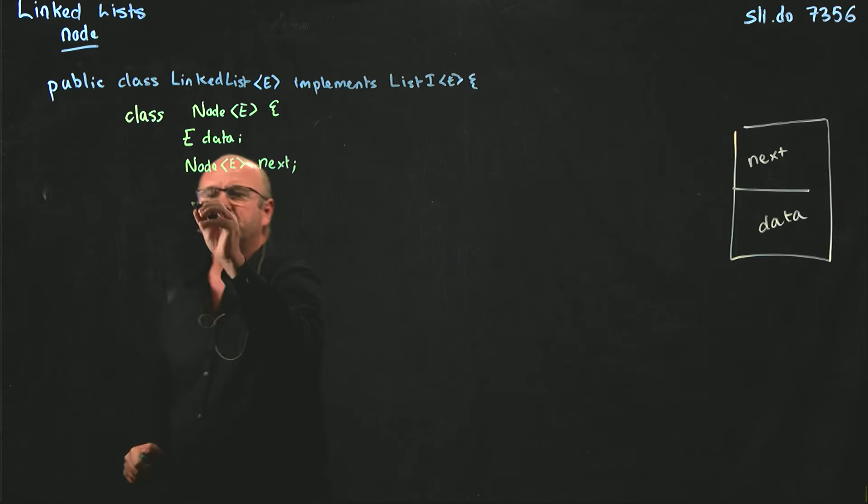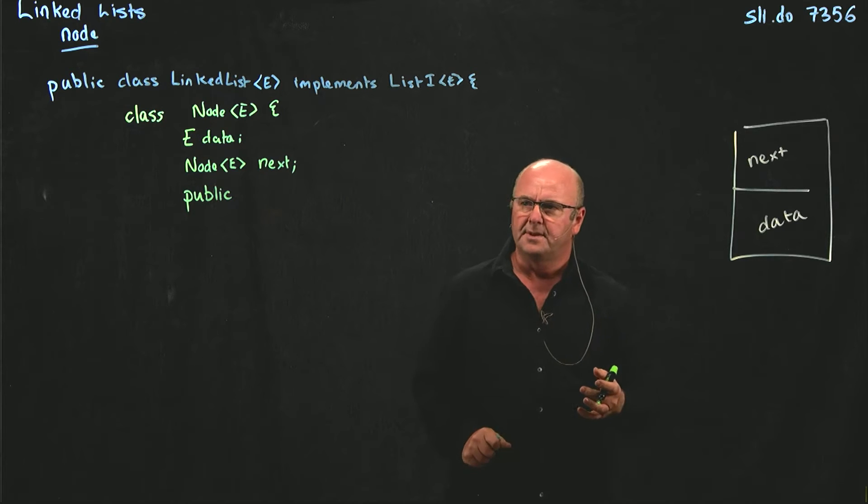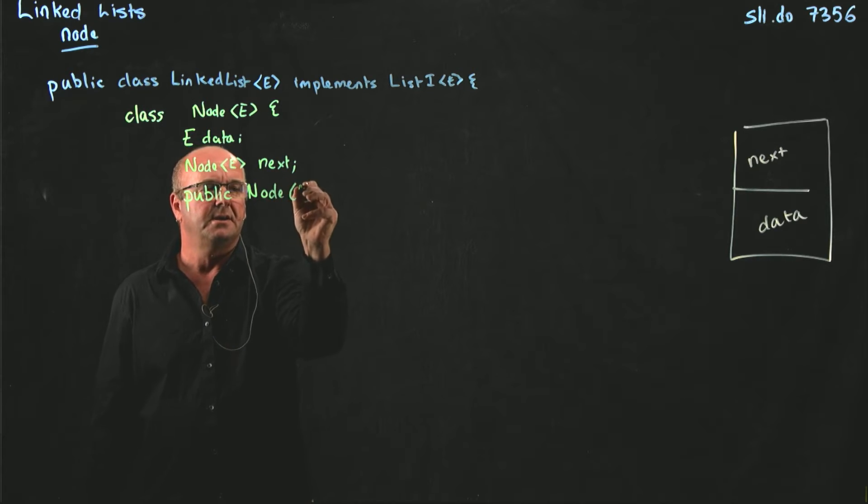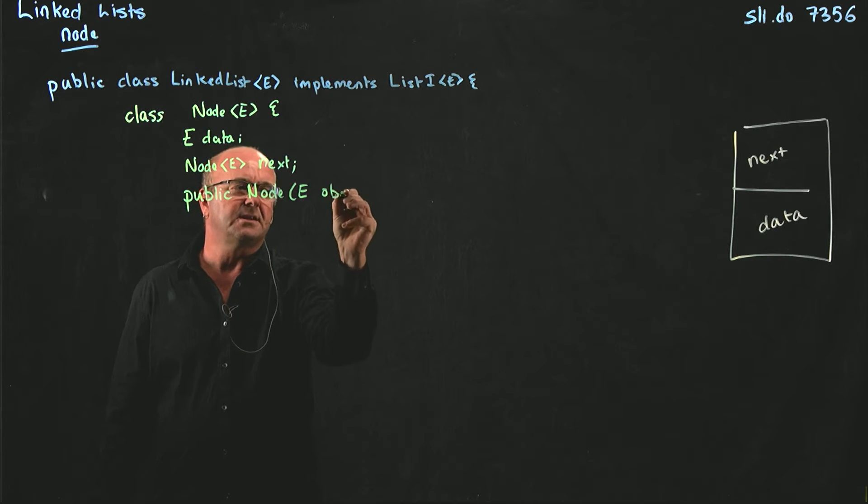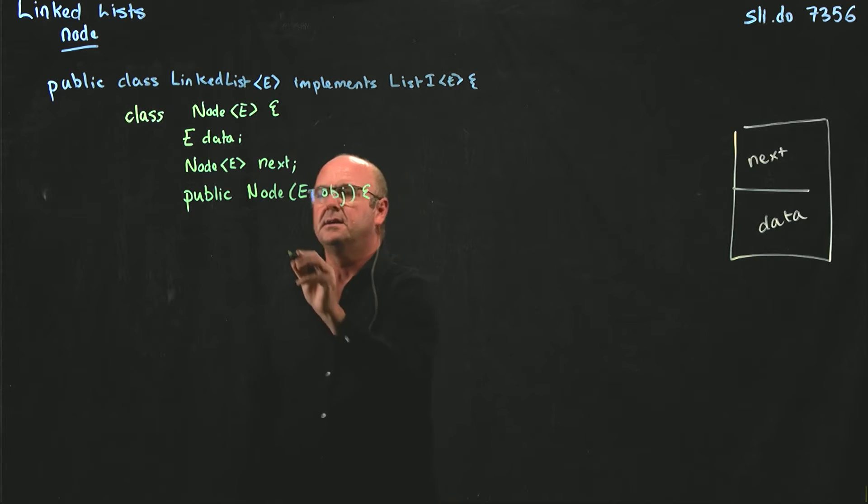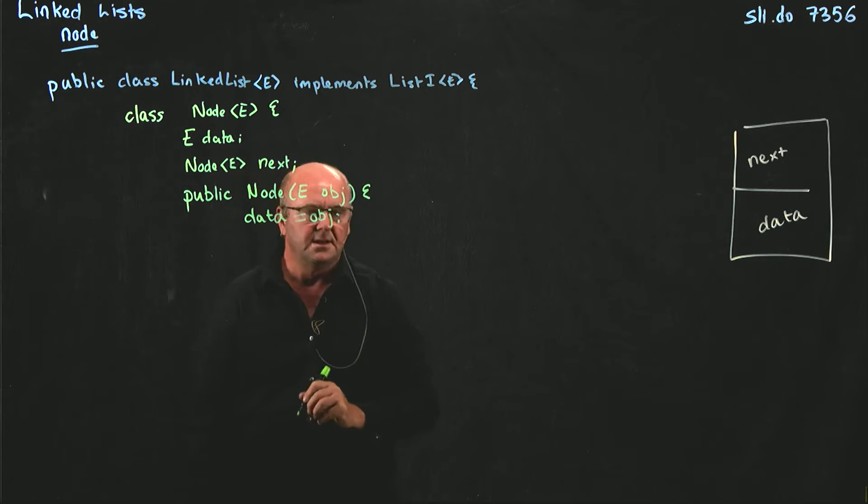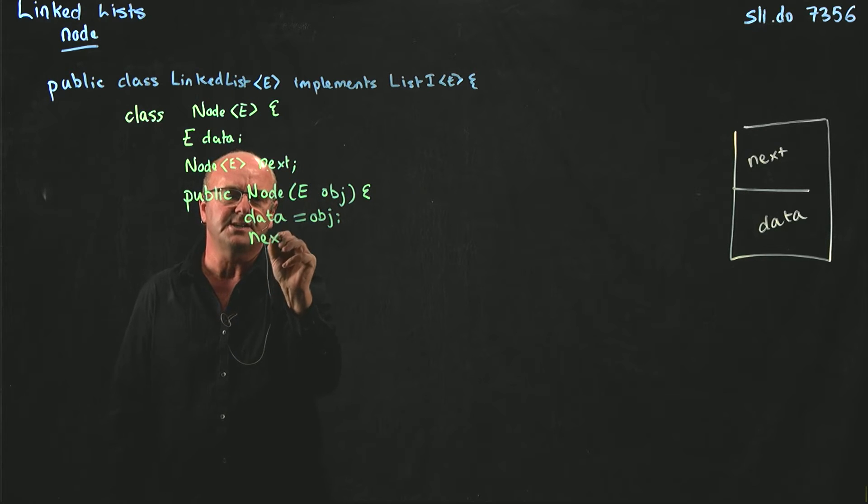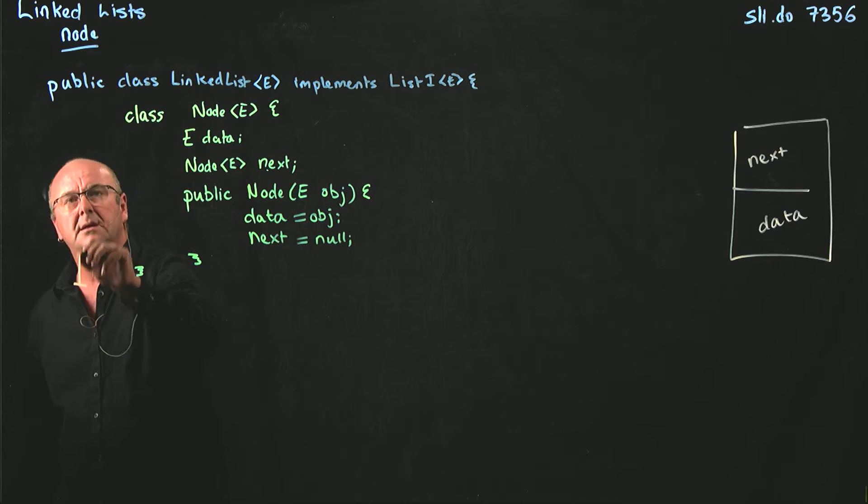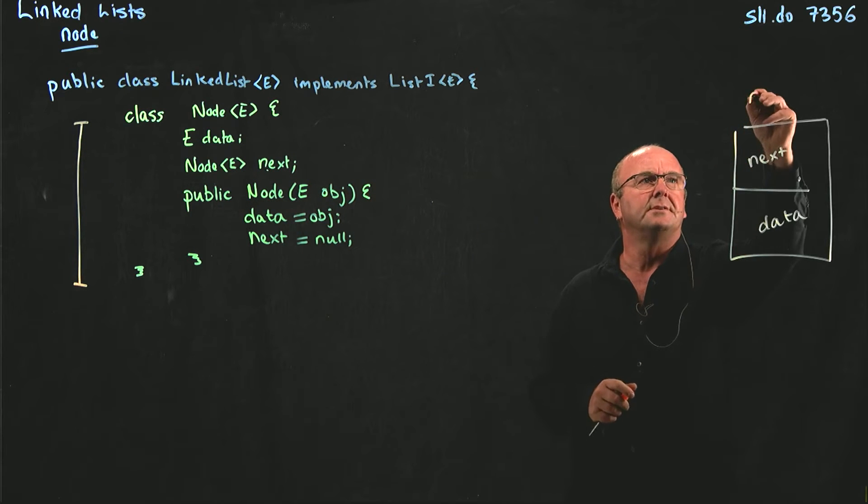And then we just need a constructor. Our nodes, we're not going to have nodes with nothing in them. Our nodes always have something in them. So we're going to have a public node constructor, and this is going to take specifically an object. We don't care what it is, it's just of type E. And so we set data equal to object, and we set next, we initialize next, equal to null. So this little block of code right here, this little inner class represents our node object.